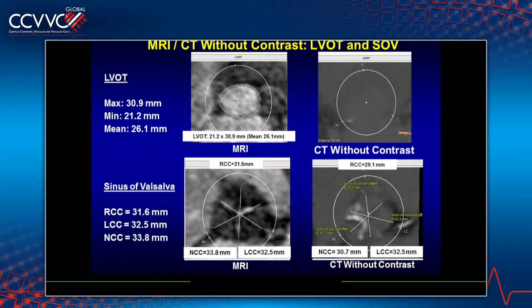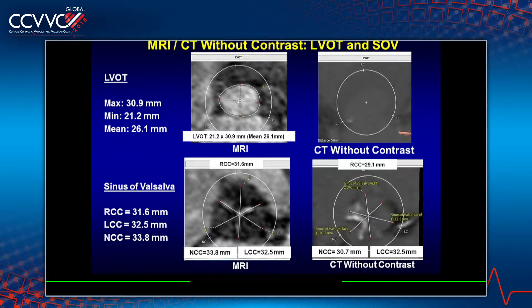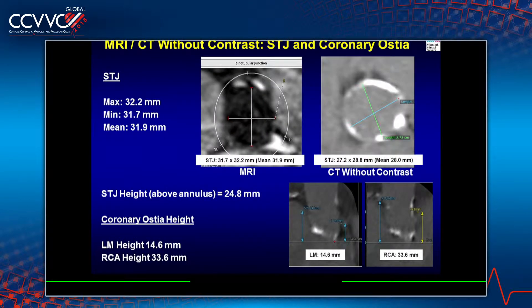You can see going down to the LVOT, very nice definition as well, and the SOV with reasonable measurements. The key thing on the sizing of the annulus: we're getting a mean perimeter of about 80, and we'll confirm that with the 3D echo. The measurements are very reasonable. Looking up to the STJ, the CT on the right and MR on the left — the CT for calcium is showing some significant calcification there. Coronary heights off the CT are very reasonable.